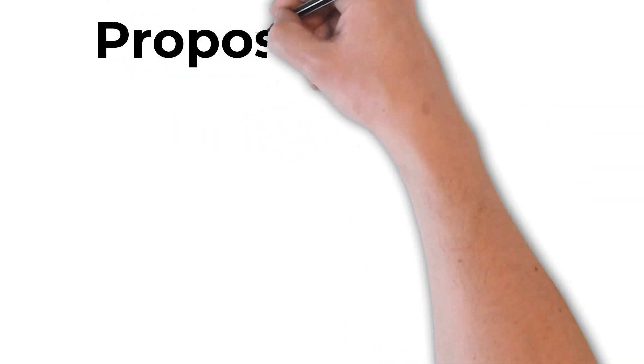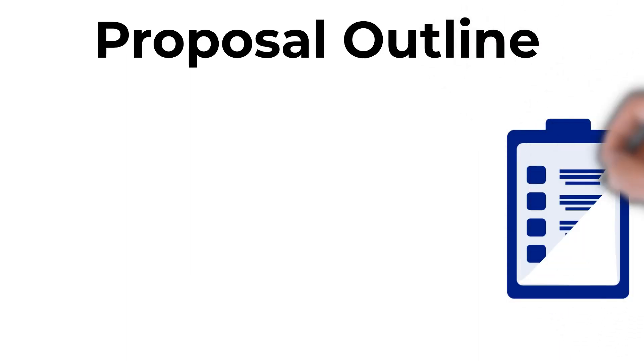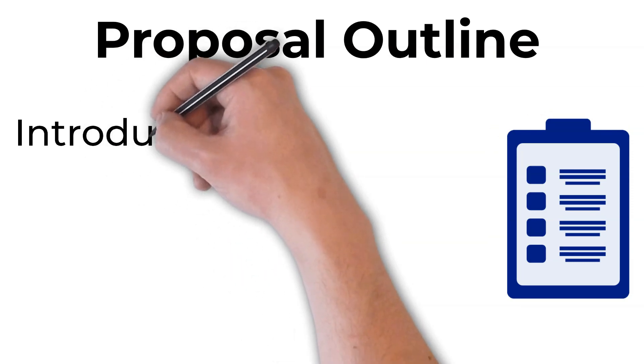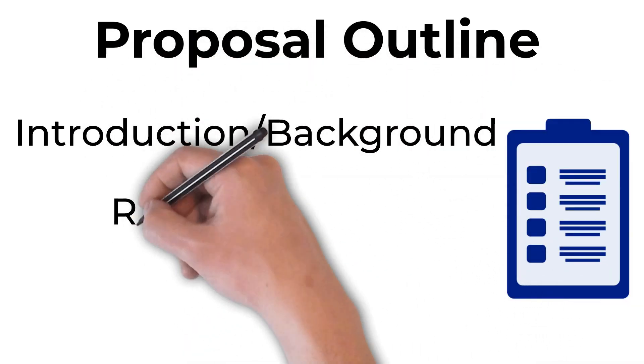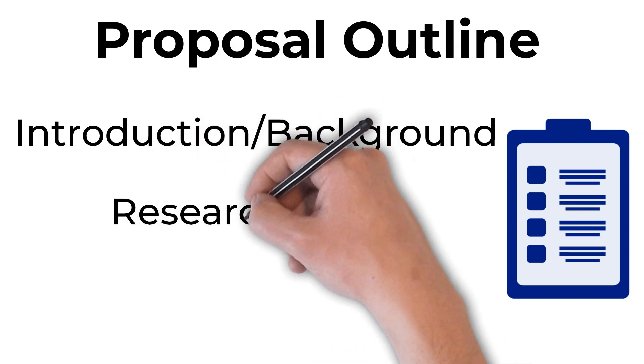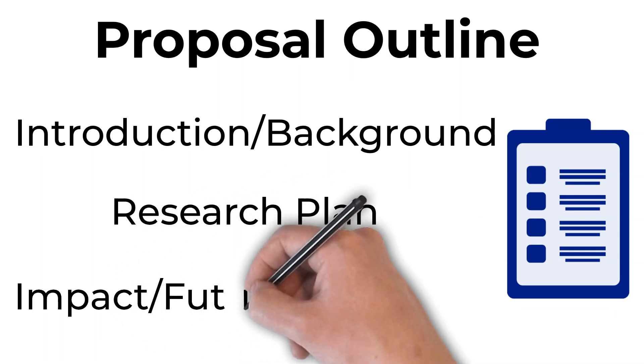Once you have your aims completed, you can start working on a proposal outline. In your outline, you first want to start with an introduction and background knowledge necessary for your proposal. Then you're going to talk about the research plan that you've come up with, and finally, finish with the impact of this research and future directions.